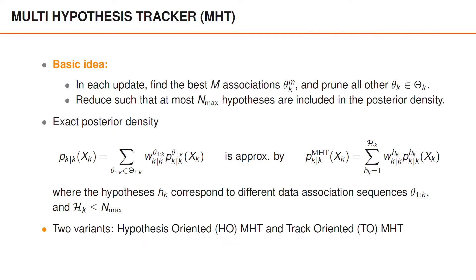There are two variants of MHT that can be found in the object tracking literature. One called hypothesis-oriented, or H-O, and one called track-oriented, or T-O. We will start with hypothesis-oriented MHT, and we'll come back to track-oriented.